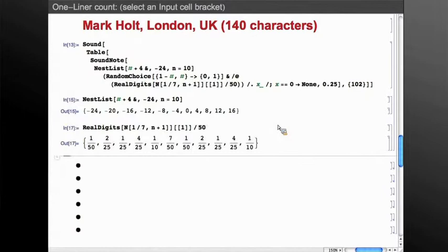So the way those are used as probabilities is by applying RandomChoice to it. So it's going to make a random choice of a 0 or a 1. And that choice is weighted by this first argument of RandomChoice. It's weighted by these probabilities that were derived from the digits of 1/7.